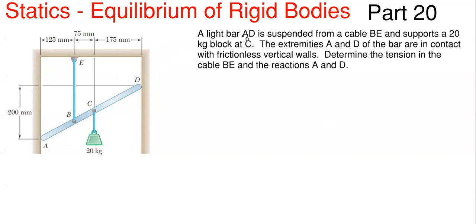What we have here is a light bar AD that is suspended from cable BE and supports a 20 kilogram block at C. The extremities A and D of the bar are in contact with frictionless vertical walls. We have to determine the tension in cable BE and the reactions at D and A.